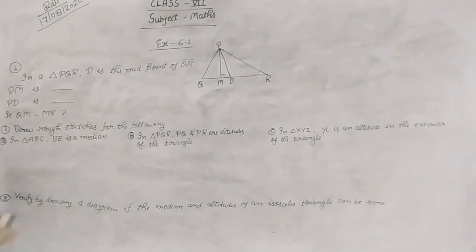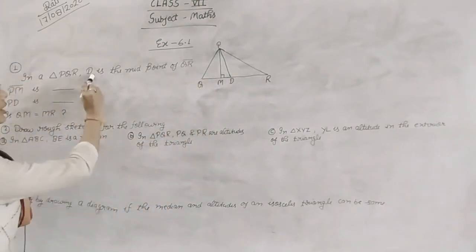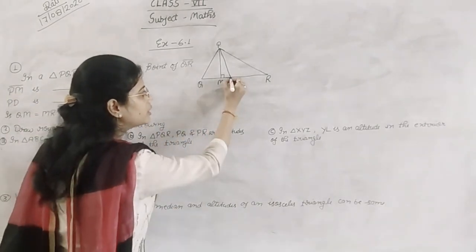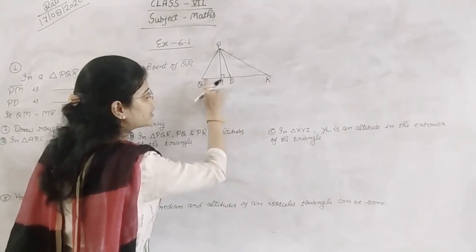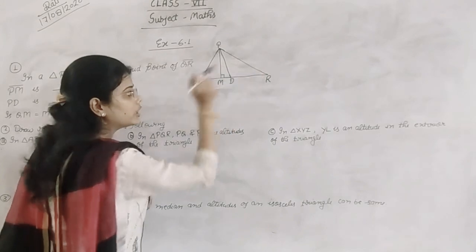First question is triangle BUR. This means D is the midpoint of UR. This is D, I have the D point here. The UR side's midpoint, the other D midpoint is UD equal to DR.